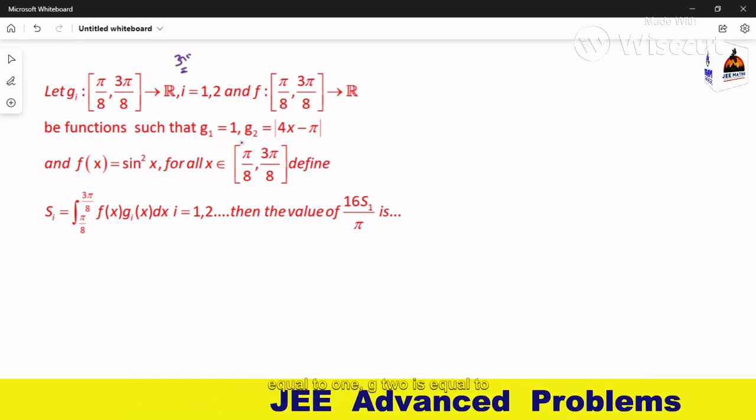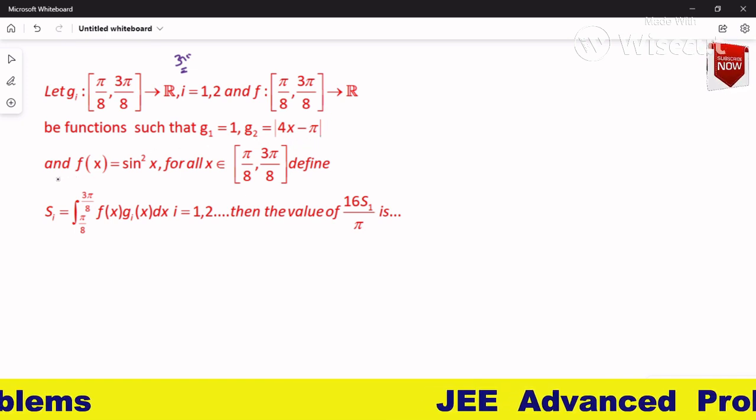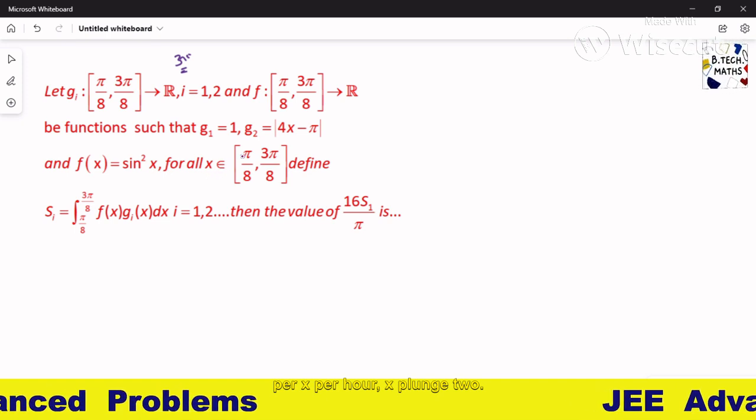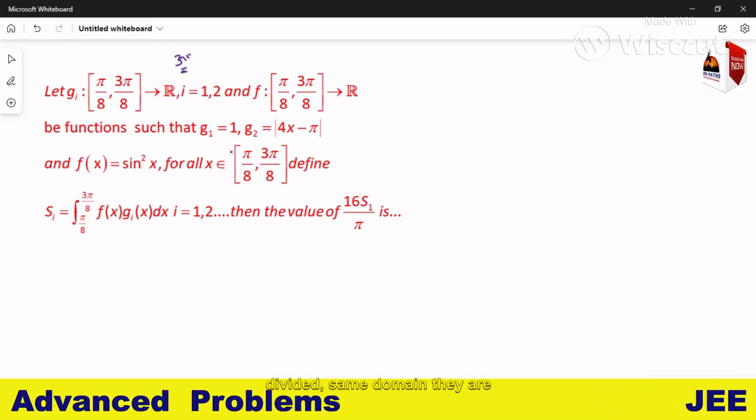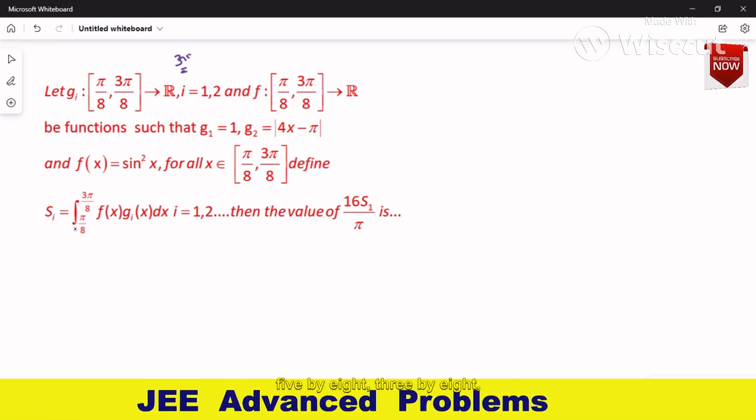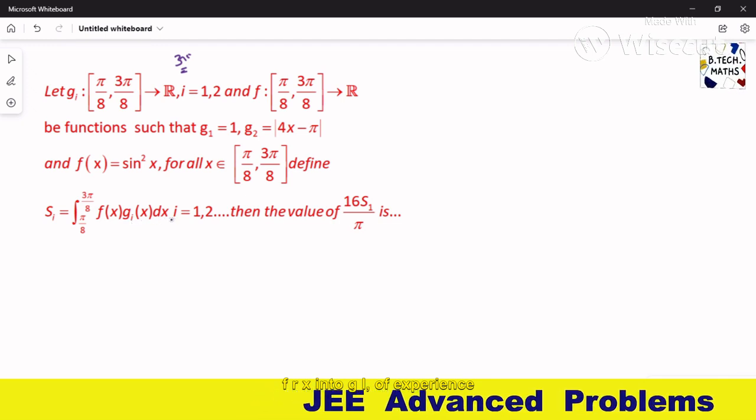We have functions such that g1 equals 1, g2 of x equals modulus of 4x minus π, and f of x equals sin squared x for all x belonging to π/8, 3π/8, the same domain. Define S_i as the integral from π/8 to 3π/8 of f(x) times g_i(x) dx.